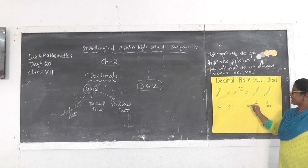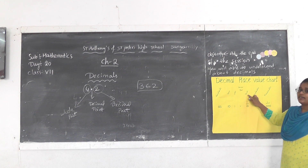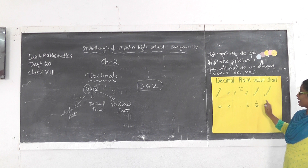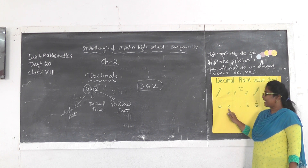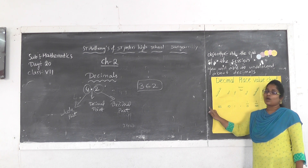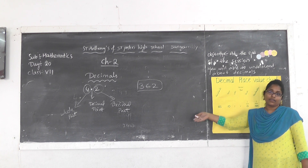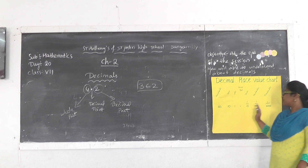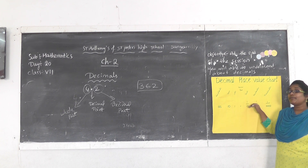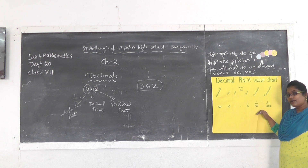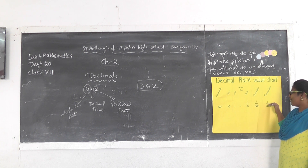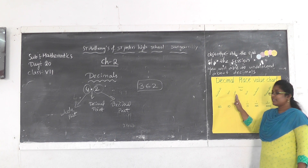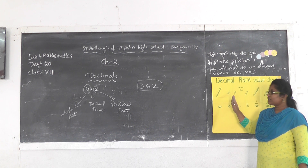Decimal point right side will be: tenths, hundredths, thousandths, and so on. That means 1 by 10, 1 by 100, 1 by 1000. This is the place value chart of the decimal. Decimal point left side: 1, 10, 100, 1000, 10000. Decimal point right side: 1/10, 1/100, 1/1000.